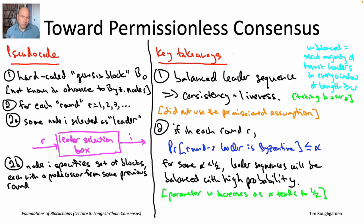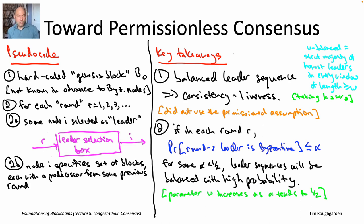The only missing piece for turning longest chain consensus into a permissionless version with exactly the same consistency and liveness properties is the magenta box. In the permissioned PKI setting, it's clear how to implement it — round robin, or uniform random selection. But in the permissionless setting, where nodes are coming and going and you have no idea how many there are, can you implement a magenta box that still works? Not obvious, but that is exactly what we will do next lecture when we discuss proof of work — the subject of lecture nine. I'll see you there.